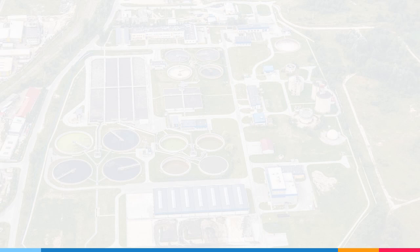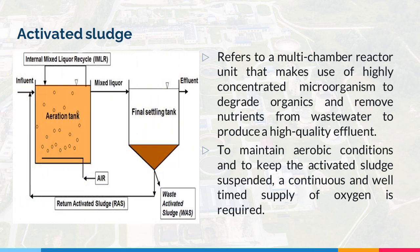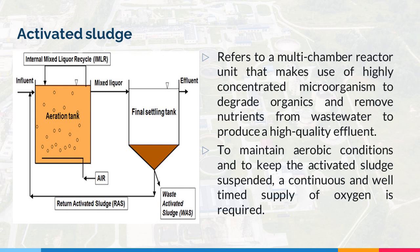One biological treatment is the activated sludge. It refers to a multi-chamber reactor unit that makes use of highly concentrated microorganisms to degrade organics and remove nutrients from wastewater to produce a high-quality effluent. To maintain aerobic conditions and to keep the activated sludge suspended, a continuous and well-timed supply of oxygen is required.